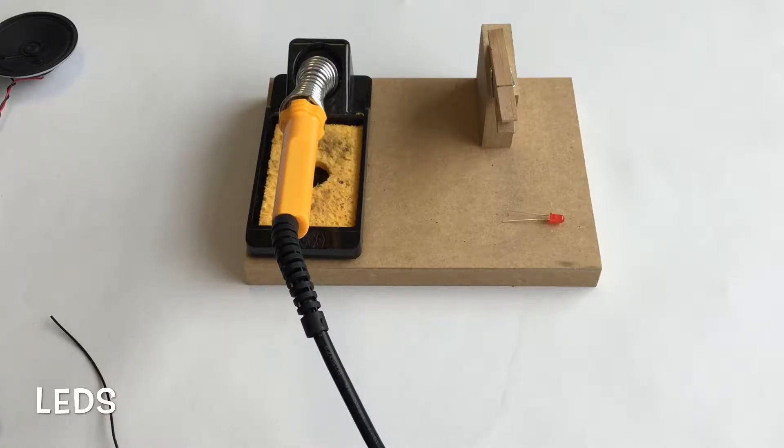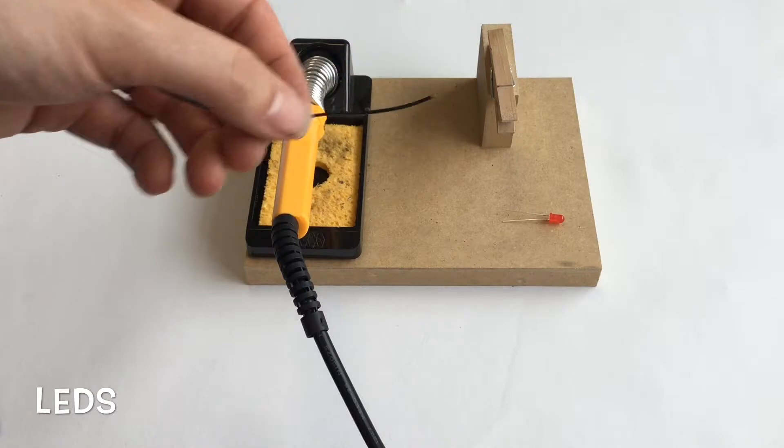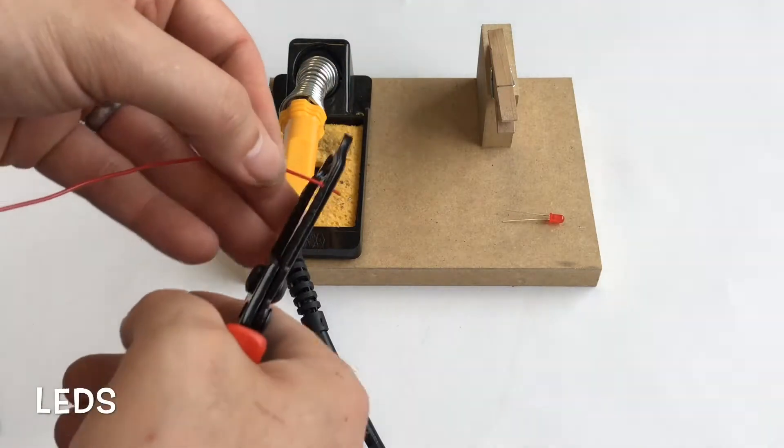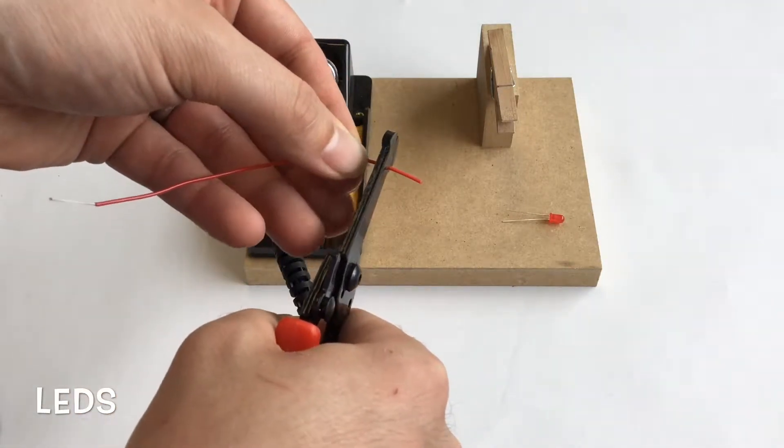For the LEDs, I need to ensure that I have got two pieces of wire. One is going to be for the cathode, the negative, and one is going to be for the anode, which is the positive. I'm going to use red for the anode and I'm going to be using black for the cathode. I will need to strip the end to about one centimeter.